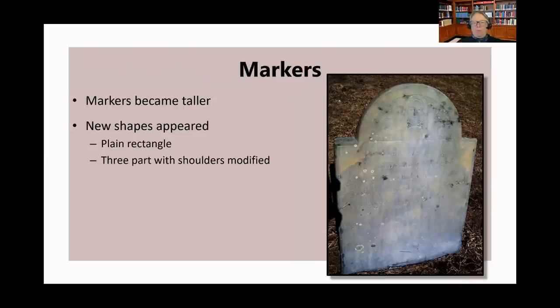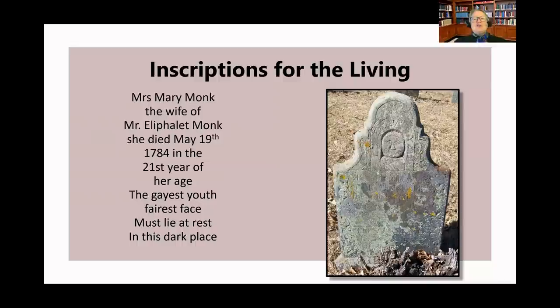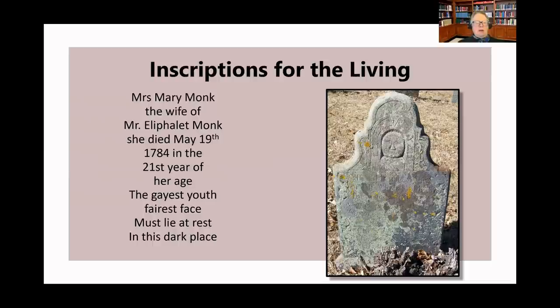Moving on to the 18th century — markers during this period became taller and began to alter their shape somewhat. New shapes appeared; sometimes the tympanum was removed altogether, creating a rectangular gravestone. For stones that did retain the tympanum, they might do away with the rounded shoulders and create a square form. Inscriptions began to move away from admonitions about the brevity of life toward inscriptions addressed to the mourners. Here we have an inscription for Mrs. Mary Monk who died in the 21st year of her age: 'The gayest youth, fairest face must lie at rest in this dark place.' Clearly, Mr. Monk was mourning his beautiful young wife.